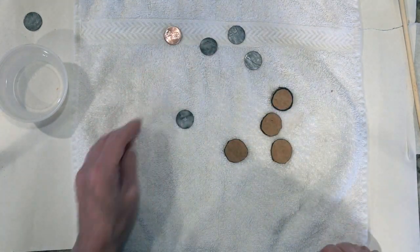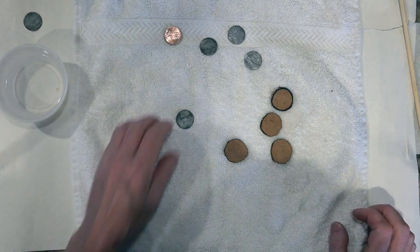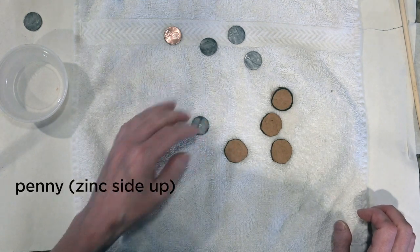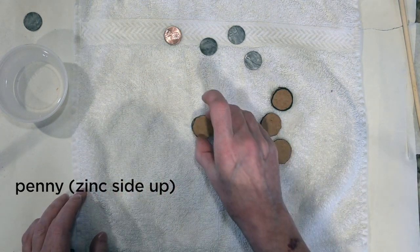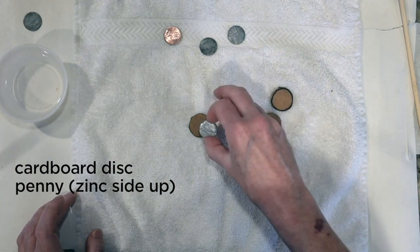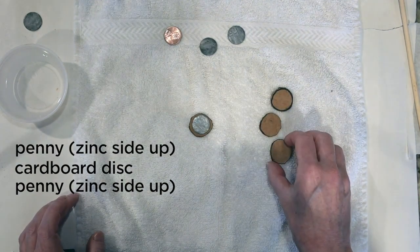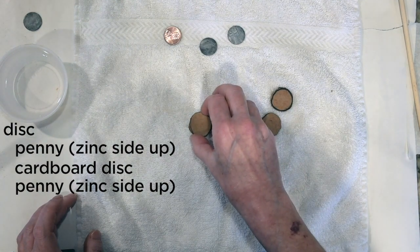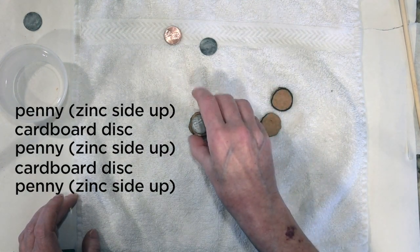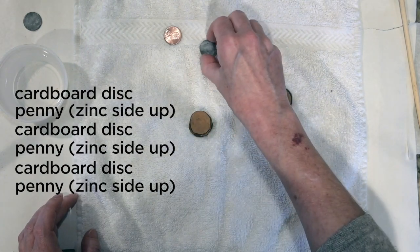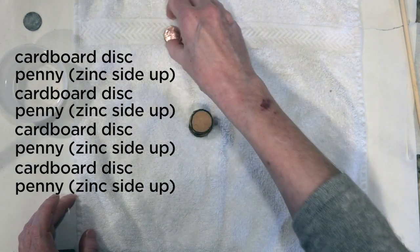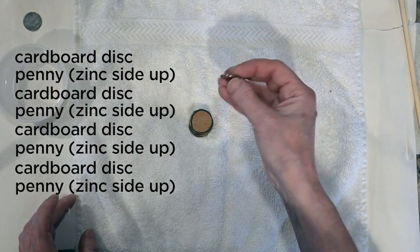The order of things is very important so watch carefully. Place your first penny with the copper side down and the zinc side up. Then add a cardboard disc. Place the next penny, copper down, zinc up, and add a cardboard disc. Keep going that way. And when you get to the top, add the penny that you didn't do anything to.